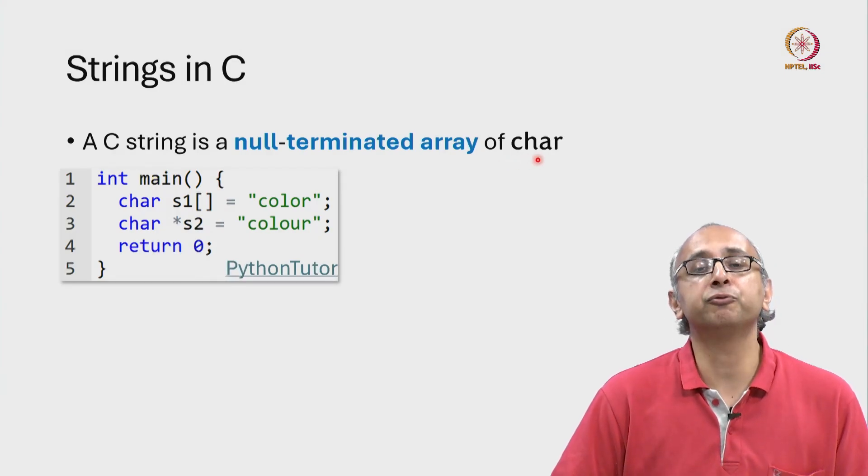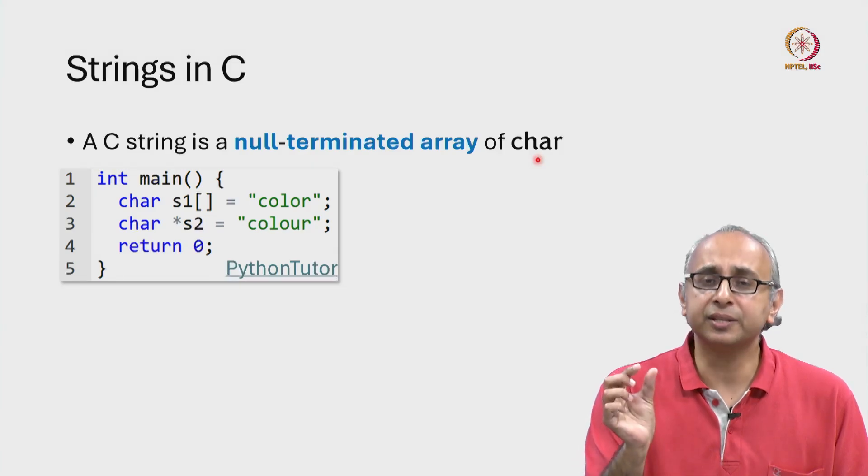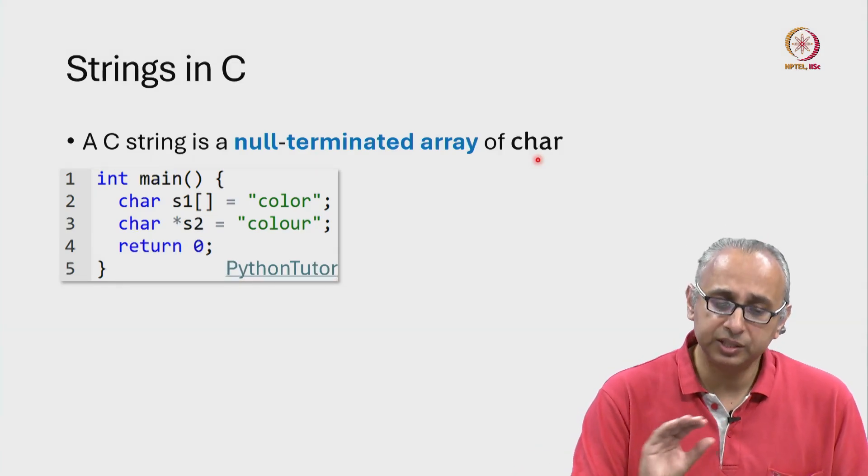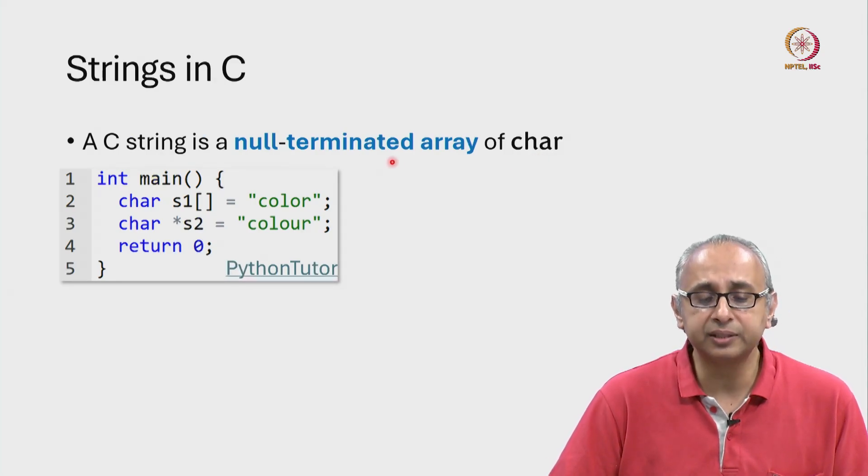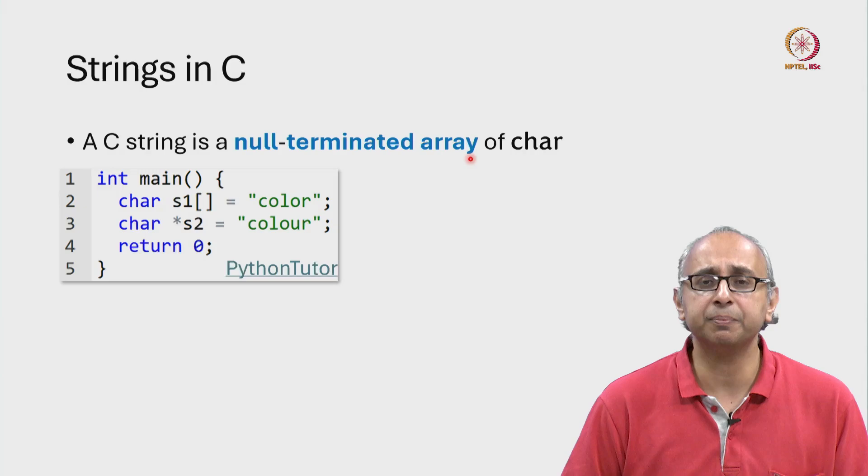Char at least we are familiar with. This is a special data type in C that is capable of storing individual letters. And a C string is a null terminated array of characters. So let's understand these terms one by one.